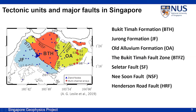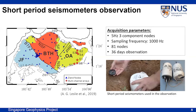For bedrock detection, we use two sets of data to record the ambient noise. The first is short-period seismometers for the whole island observation, using one month's data to get the velocity map of the whole island. The other is a multi-channel observation — a short-time observation at particular sites in the eastern part. Continuous seismic records were collected from 81 short-period three-component land nodes. Each node has two horizontal components (E and N) and one vertical component (Z). The nodes are set across Singapore, and their locations are marked as blue triangles.